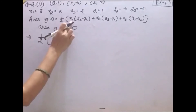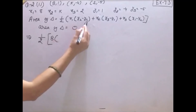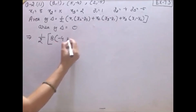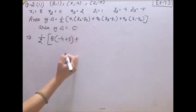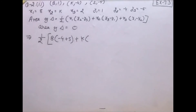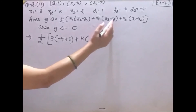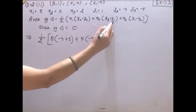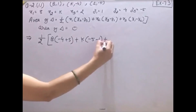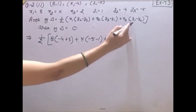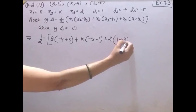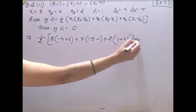Formula में put करेंगे: one upon two × [x1(y2 − y3) + x2(y3 − y1) + x3(y1 − y2)] = 0। x1 = 8, y2 = −4, y3 = −5; x2 = k, y3 = −5, y1 = 1; x3 = 2, y1 = 1, y2 = −4।